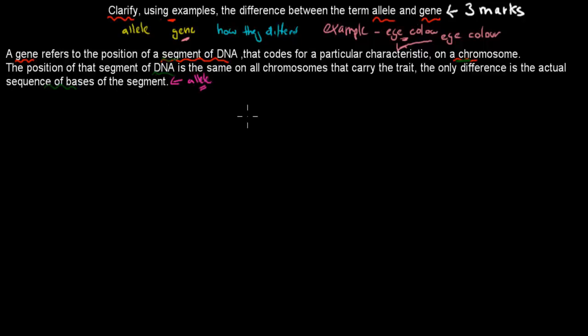So the particular characteristics that we're going to go for in an example would be eye color. So there's a gene which codes for the eye color. And what that gene is, it's just a segment of DNA. And specific chromosomes will always have that segment of DNA. The position of that segment of DNA is the same on all chromosomes that carry that trait. So where we can find that segment is always the same. The only difference is the actual sequence of bases of the segment. And that sequence of bases being different is actually our allele.